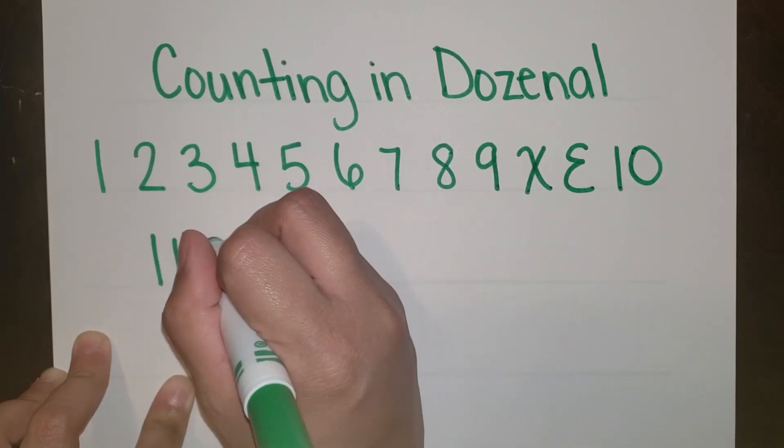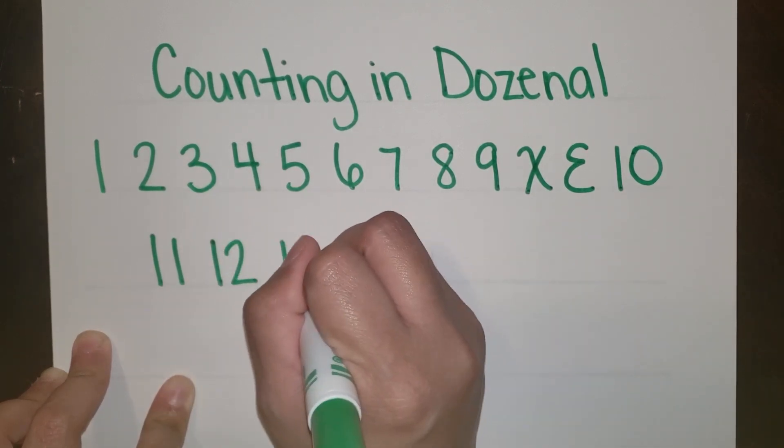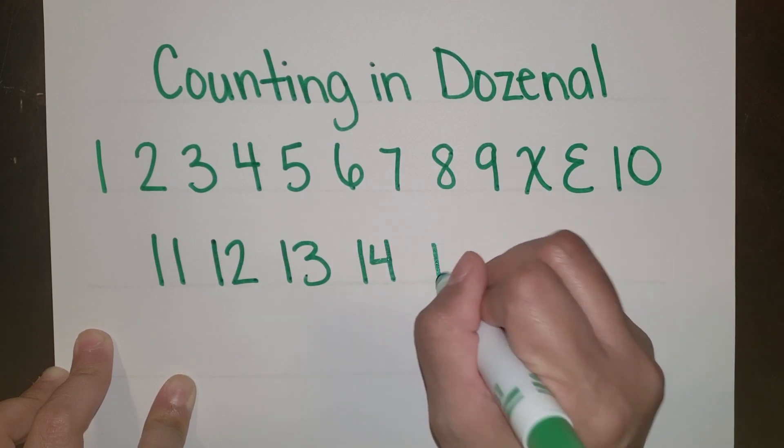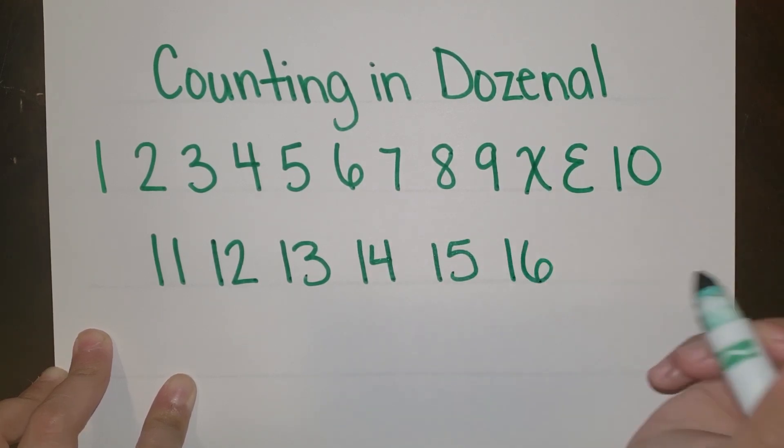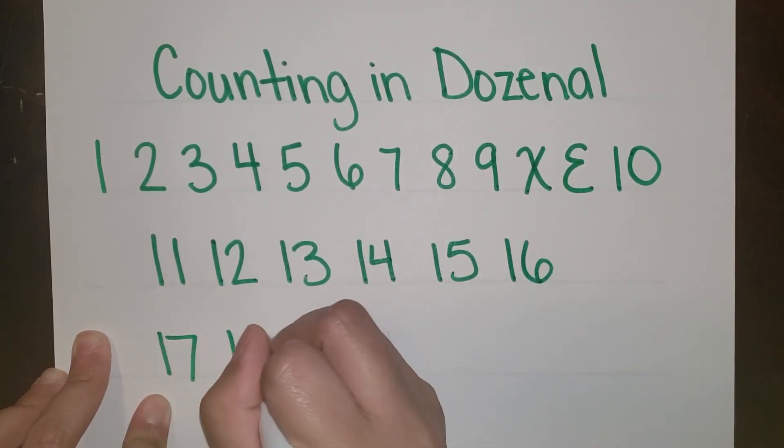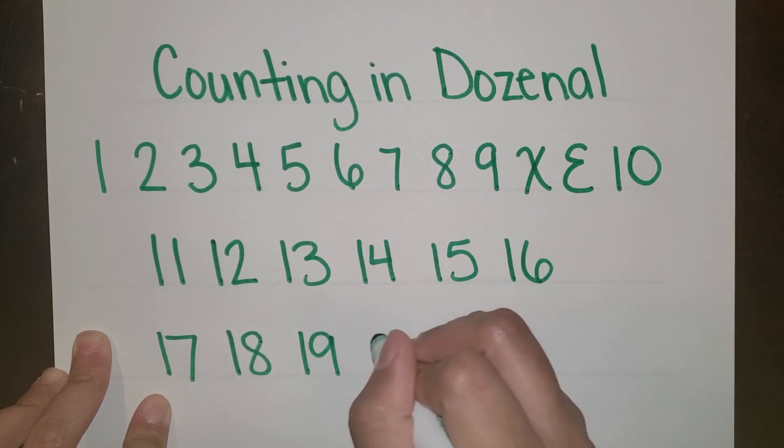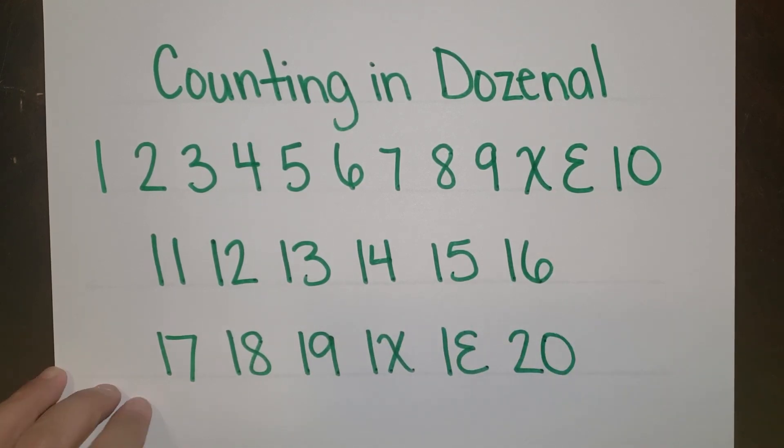For the next row: 1 DOE 1, 1 DOE 2, 1 DOE 3, 1 DOE 4, 1 DOE 5, 1 DOE 6, 1 DOE 7, 1 DOE 8, 1 DOE 9, 1 DOE DEC, 1 DOE L, 2 DOE.